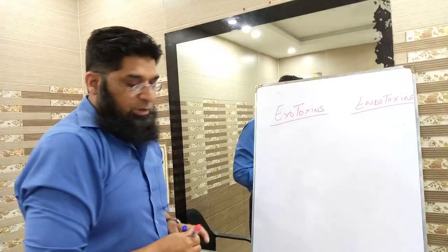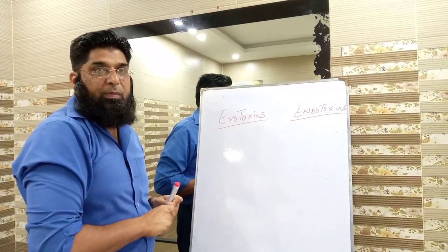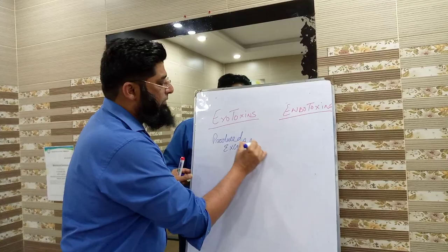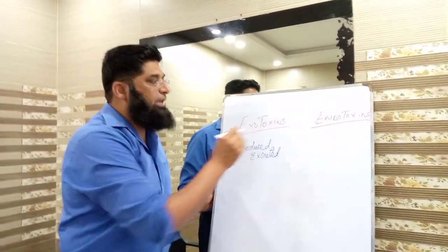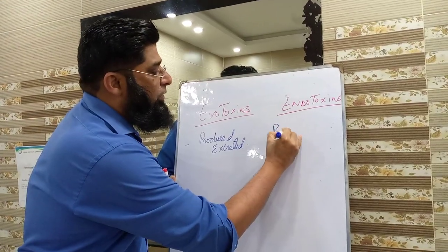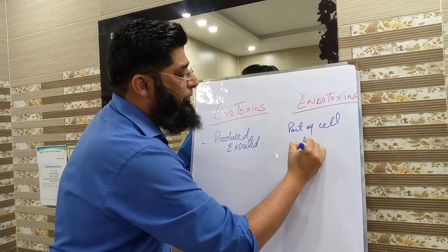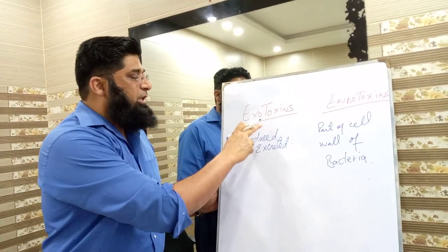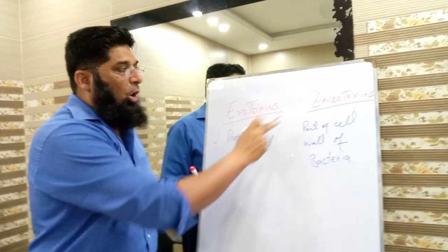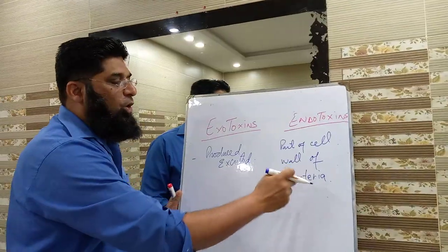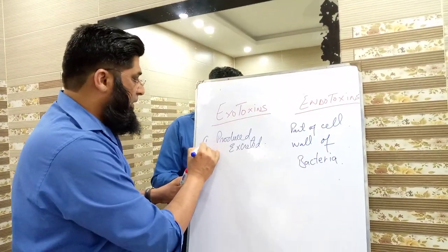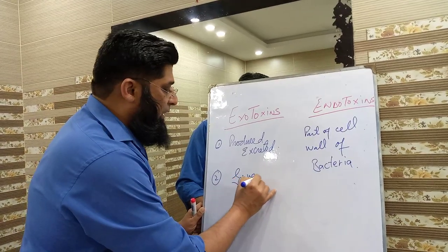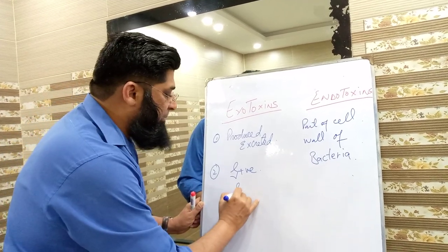Exotoxins are produced or excreted by bacteria, whereas endotoxins are part of the cell wall of gram-negative bacteria. Exotoxins are produced by mostly gram-positive bacteria and some gram-negative bacteria.